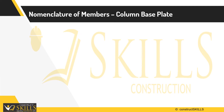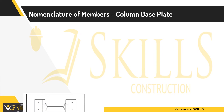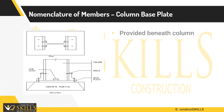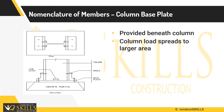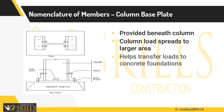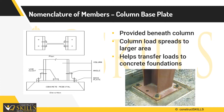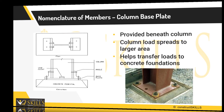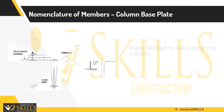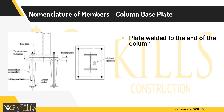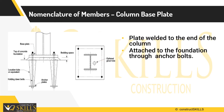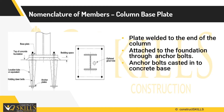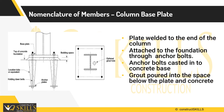Nomenclature of members — one is column base plate. It is provided below the column so that the column load spreads to a larger area. It also helps to transfer loads to concrete foundations. The plate is welded to the end of the column and attached to the foundation through anchor bolts. Anchor bolts are cast into the concrete base, and grout is poured into the space below the plate and concrete.